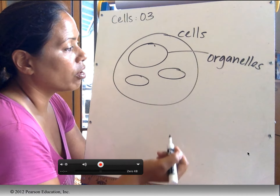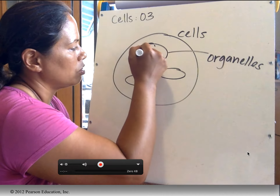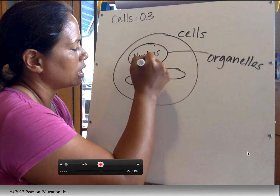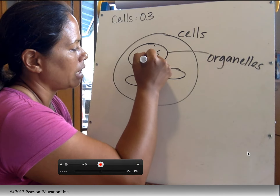What kind of organelles do we have? Well, we have the brains of the operation. Who's the brains of the operation? That's the nucleus. And the nucleus contains the DNA.